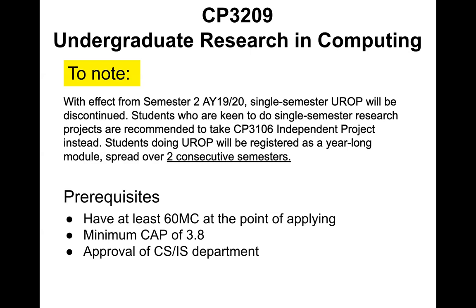Typically, UROP students push UROP off and start to panic in second semester, saying, 'I've only got two months left, I haven't really done anything, I'm still reviewing background, I don't even have a problem statement.' That becomes a liability. The 60 MC requirement and minimum CAP of 3.8 are just to reassure us you're on the level. If you have extenuating circumstances — like an Olympiad or prior H3 research — we do make exceptions, but the rationale is to make sure SOC coursework is not posing a problem.